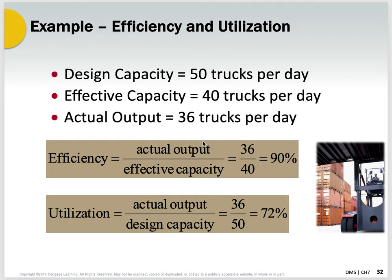Here's an example. The design capacity for a warehouse loading and unloading operation is 50 trucks a day. Your effective capacity — accounting for breaks, lunchtimes, shift changes, etc. — is only 40 trucks a day. Your actual output is 36 trucks per day. So actual output is 36, which is the numerator in both equations. Effective capacity is 40, so you're at 90% efficiency. Actual output versus design capacity gives you 72% utilization.